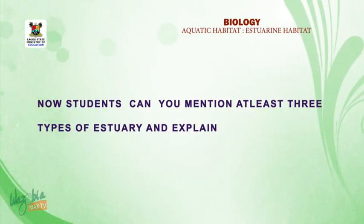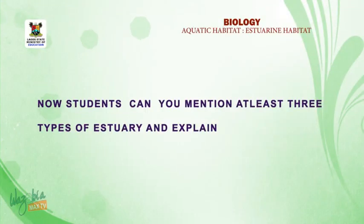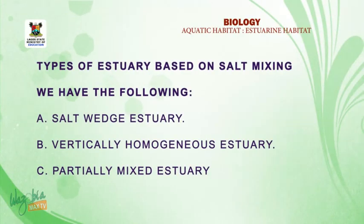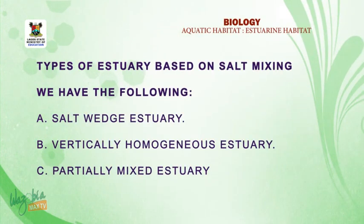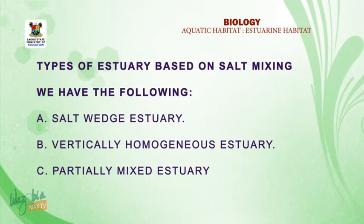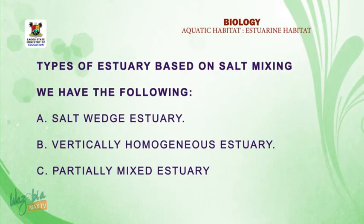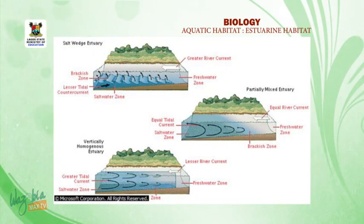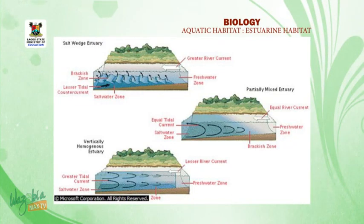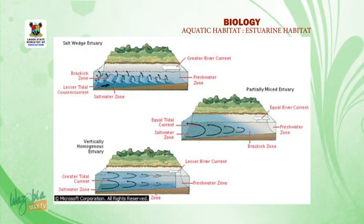Students, can you mention at least three types of estuary and explain them? Now let's continue: types of estuary based on salt mixing. There are three types: A — salt wedge estuary; B — vertically homogeneous estuary; C — partially mixed estuary. Take a look at this diagram, which illustrates the three main types of estuary. Tides, wind, wave motion, and river runoff all contribute to create various water conditions within an estuary.